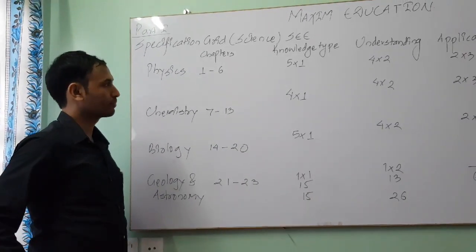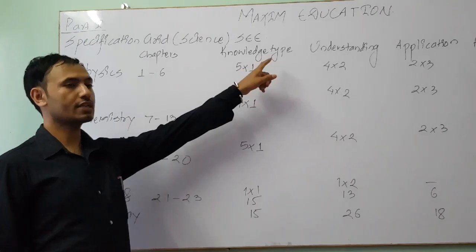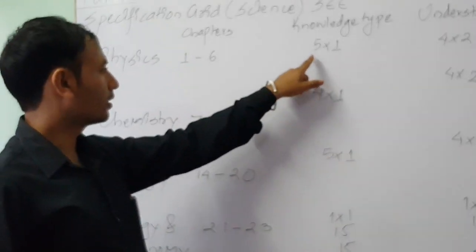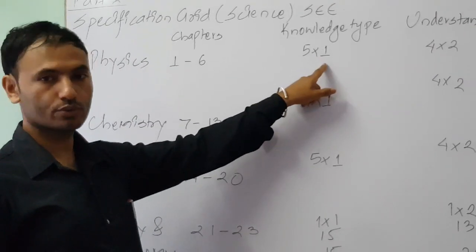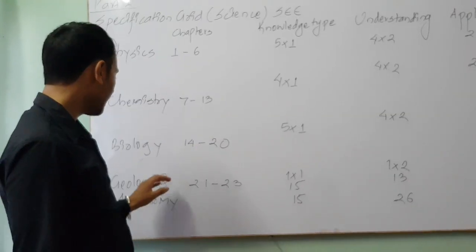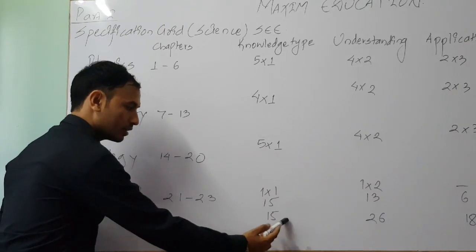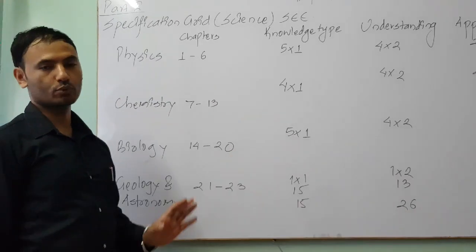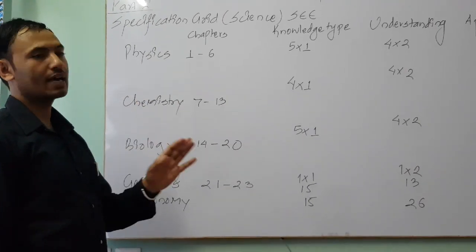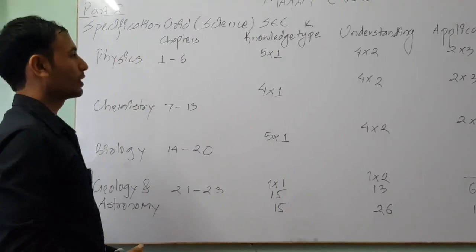The first type of question you will get in science in your FCE exam is the knowledge-type question, where you need to answer in one sentence for one mark. In physics you will have 5 such questions, chemistry 4, biology 5, and geology and astronomy 1 — altogether 15 questions for 15 marks. This is the first category, represented as K, and it appears in Group 4.